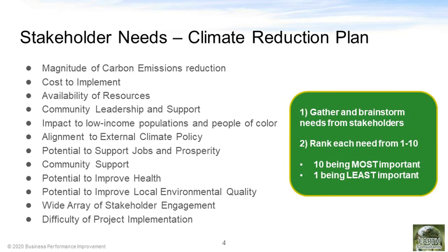Let's take an example of a climate reduction plan. Here are the different stakeholder needs that were identified in the community: the magnitude of carbon emissions reduction, the cost to implement, the availability of resources, community leadership and support, the impact to low-income populations and people of color, alignment to external climate policy, the potential to support jobs and prosperity, community support, the potential to improve health, the potential to improve local environmental quality, the wide array of stakeholder engagement, and the difficulty of project implementation.